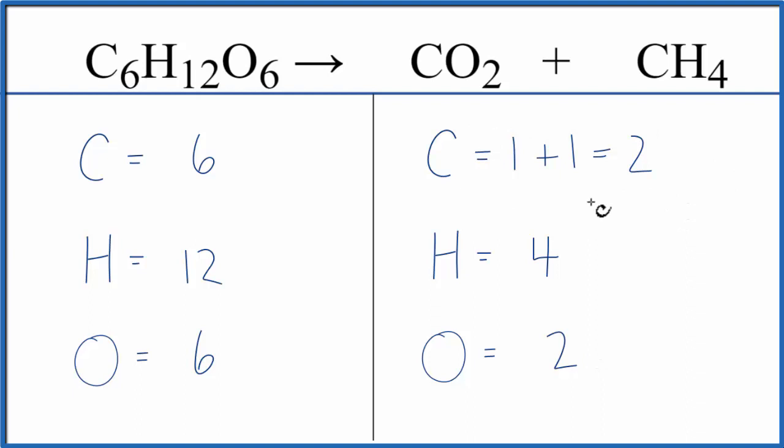Let's leave the carbons to last because they're separated here and then do the hydrogens first. Looks like we'll need to put a three in front of the CH4. Four times three. That'll give us 12. Those are balanced.